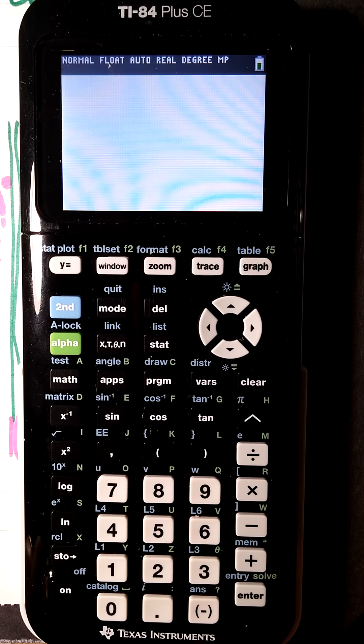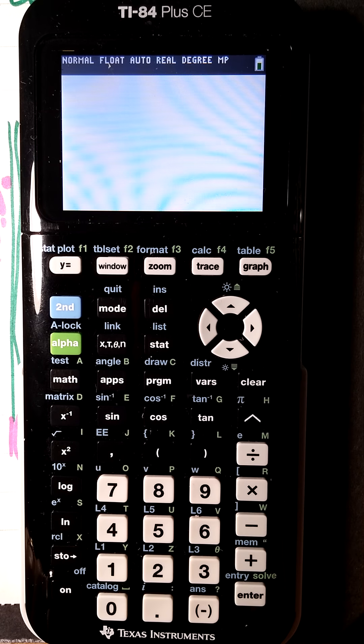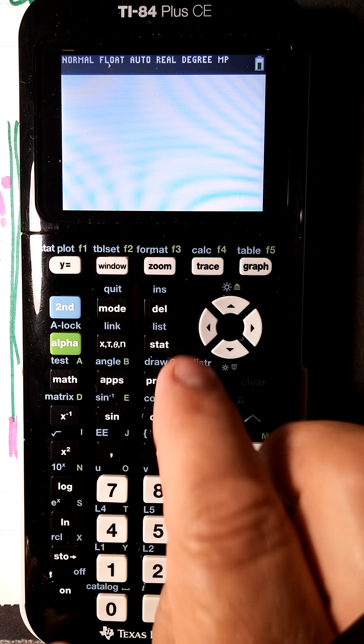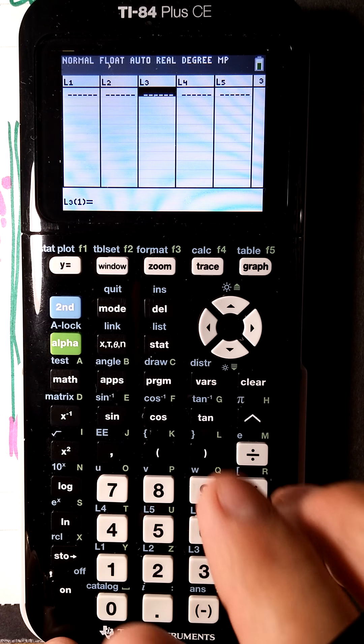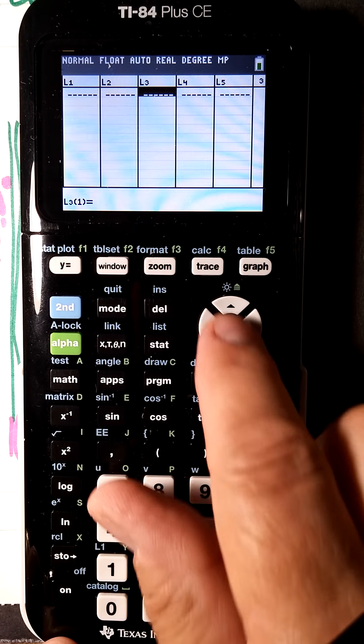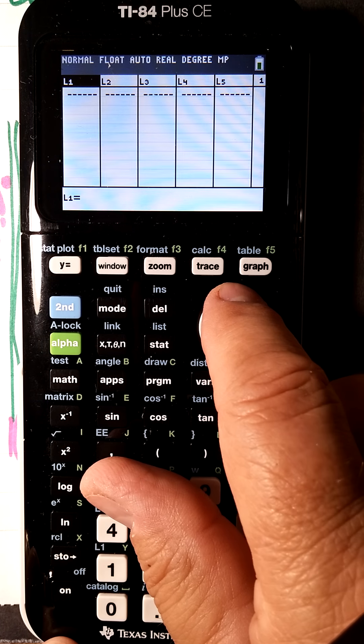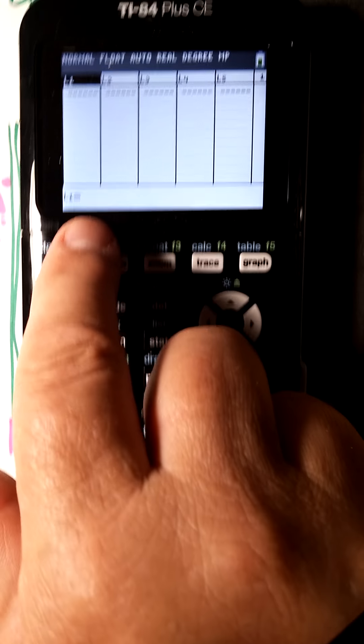We're going to use lists the same way we use these columns so you can see it easily on the screen. Go into stat and edit to see your lists. If they're not cleared out, use your arrow keys to go up to the name of the list, press clear, and it jumps down. Press enter and it clears that out.